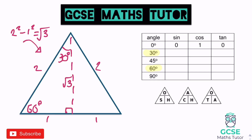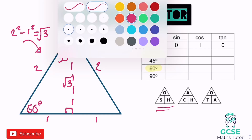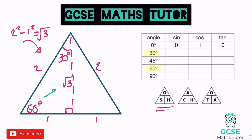We've got all the lengths we need now. Using SOHCAHTOA, for sin 60, it's opposite over hypotenuse. Opposite the 60 is root 3, and the hypotenuse is 2, so sin 60 is root 3 over 2. For cos 60, it's adjacent over hypotenuse. The adjacent is 1 and the hypotenuse is 2, so cos 60 is 1 over 2, or one half. That's quite a nice easy one to know — cos 60 is a half — and now you can see why.